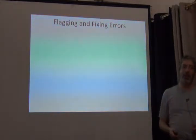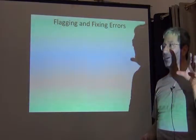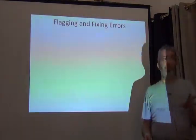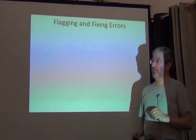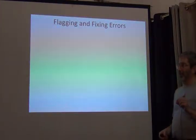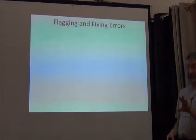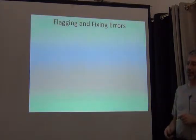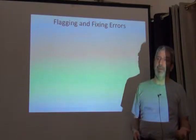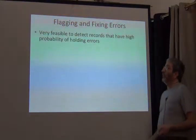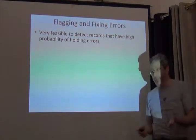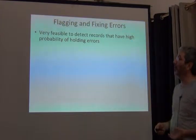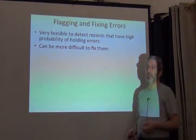Just a comment on the difference between flagging errors — essentially signaling that a record probably has some problems — versus fixing the errors. It's generally a lot easier to say there's something wrong with this record than to say the real value is this and not that. That's the difference between flagging and fixing. It's very feasible to pick out individual records that are probably wrong. How they're wrong is a little harder, and determining the correct value is a lot harder than detecting the problem.